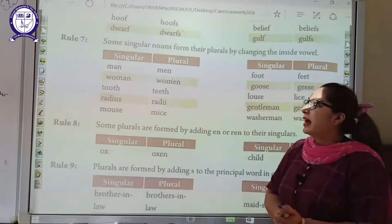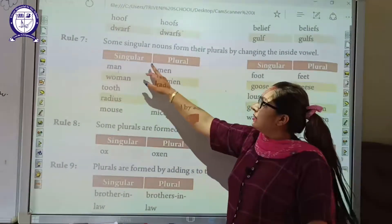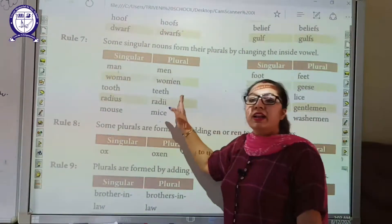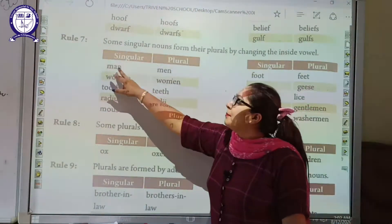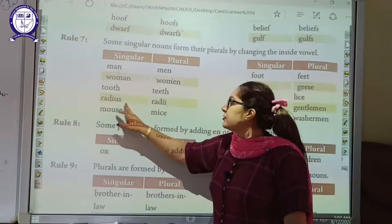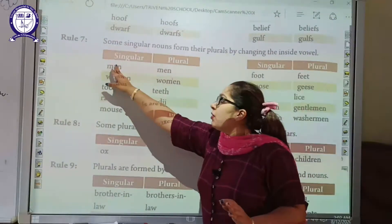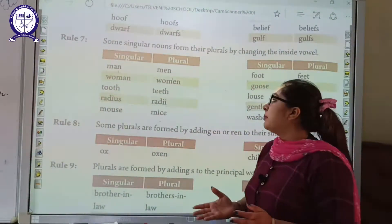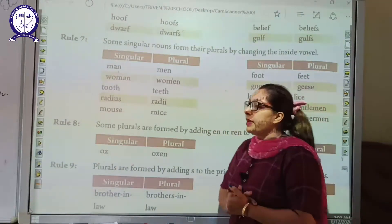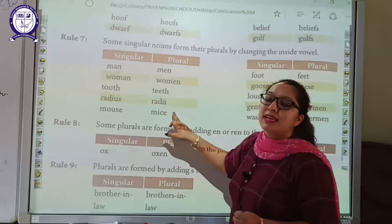Let's start with our 7th rule. Some singular nouns form their plural by changing the inside vowel. We have to change the vowel. Like: man will change into men, woman will change into women, tooth will change into teeth, mouse will change into mice. You have noticed that in the singular form there is a vowel inside the word, and after making it plural, the vowel changes inside the word. So in this 7th rule, we make words plural by placing a different vowel inside the word.